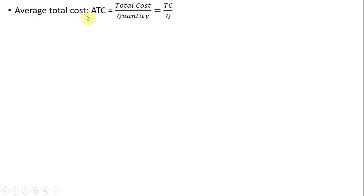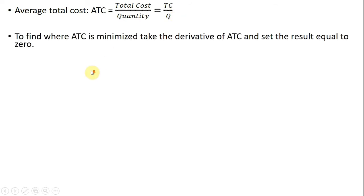So average total cost, ATC, is just total cost divided by the quantity of output, or TC divided by Q. To find where average total cost is minimized, mathematically you would take the derivative of average total cost and set that derivative equal to zero. So that's what we're going to do.